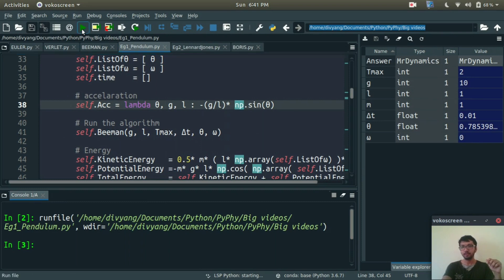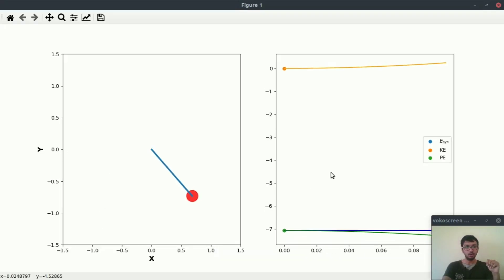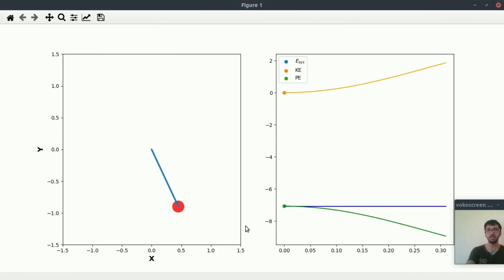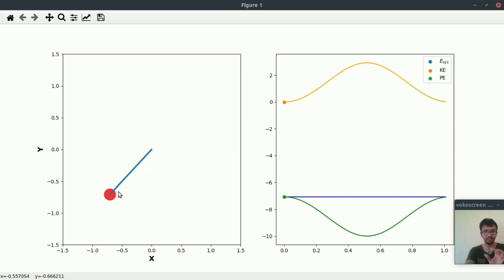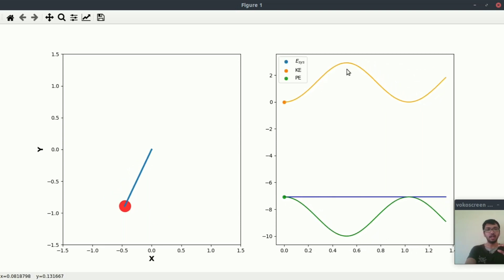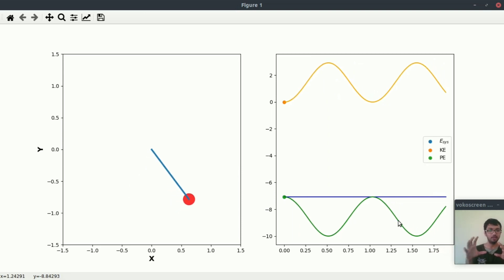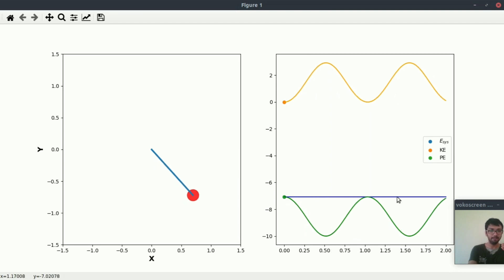We are getting these results. Here this blue straight line represents the arm of this pendulum and this red dot is our particle and it is performing an oscillatory motion. This orange continuous curve is our kinetic energy and this green curve represents the potential energy of this pendulum.